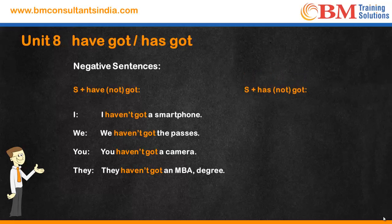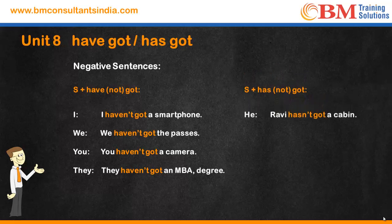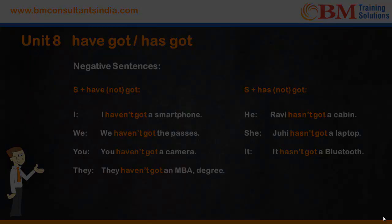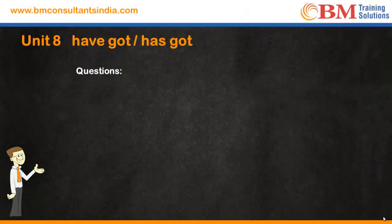With he, she, it, we use 'hasn't got.' For example: 'Ravi hasn't got a cabin,' 'Juhi hasn't got a laptop,' and 'It hasn't got a Bluetooth.' Now let's look at the use of 'have got' or 'has got' when we are framing a question.